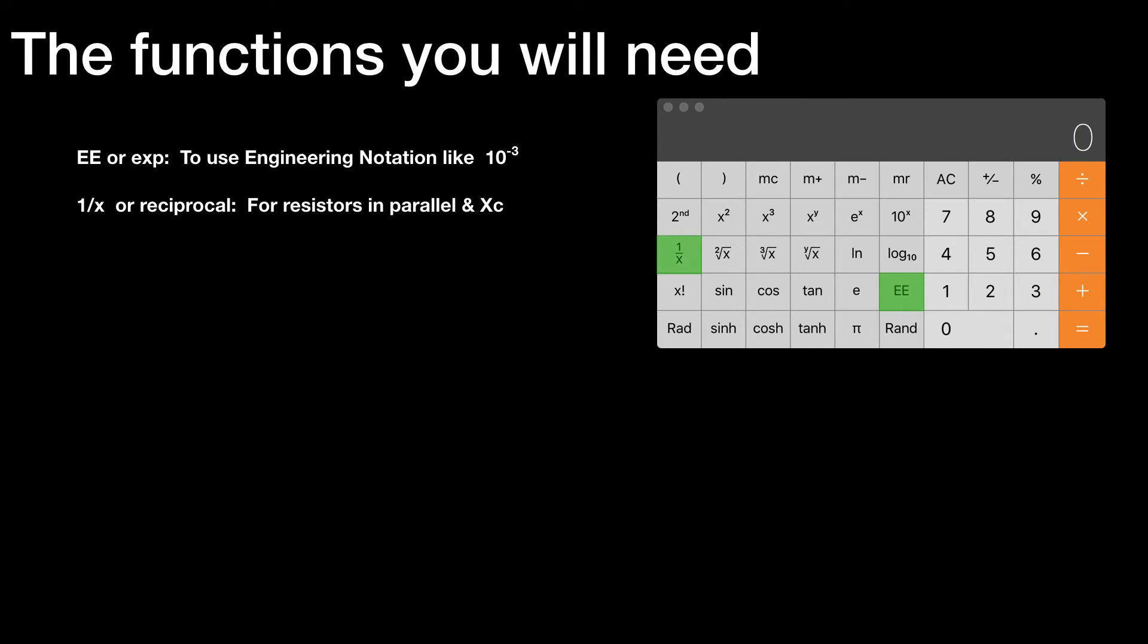1 over X, or reciprocal. For resistors in parallel, 1 over R equals 1 over R1 plus 1 over R2, etc. You need a button for reciprocal. Also, formulae like Xc equals 1 over 2 pi fc - it's helpful if you have the reciprocal button there as well.